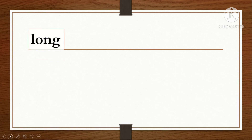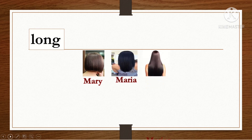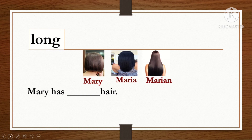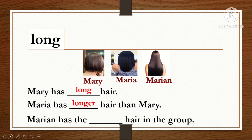Next example. The adjective is long — look at the hair of three girls: Mary, Maria, and Marian. Mary has long hair. Maria has longer hair than Mary. Marian has the longest hair in the group.